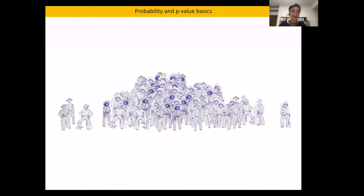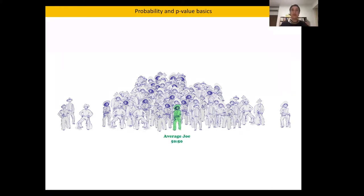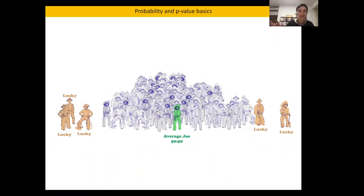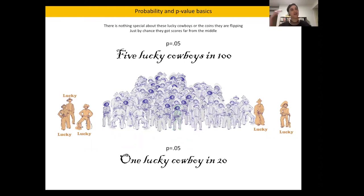I've drawn 100 cowboys for you. Imagine we've asked these cowboys to stand on a point in a barn wherever their score was while they were flicking their coins. In the very middle we're going to have our average Joe, the cowboy who flipped 50-50 perfectly, representative of the majority of cowboys. But out at the ends of the distribution, we get these lucky cowboys — nothing special about them, nothing special about the coin, it's just that the score they got happens to be very far from average Joe. Out of 100 cowboys, there are five lucky cowboys, the five furthest from the mean score, equivalent to one lucky cowboy in 20.